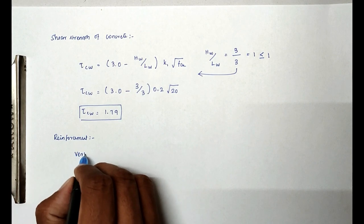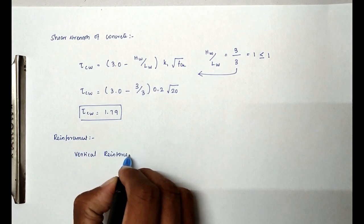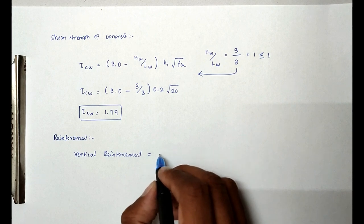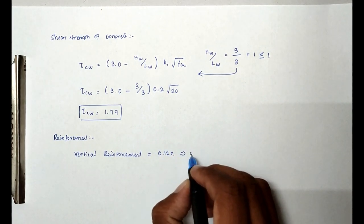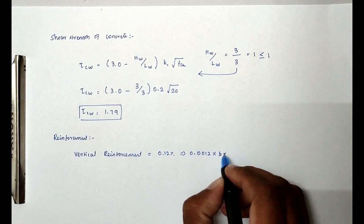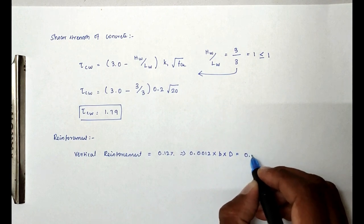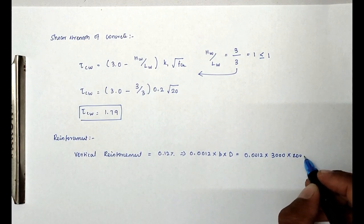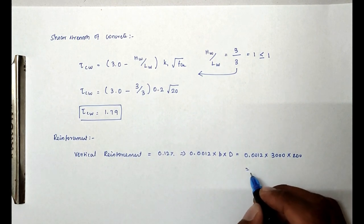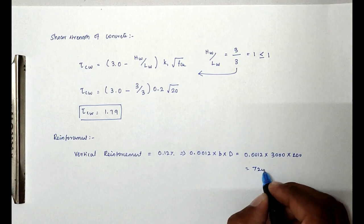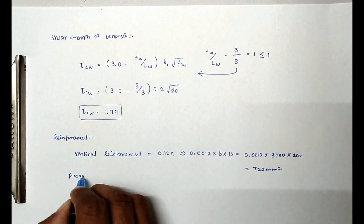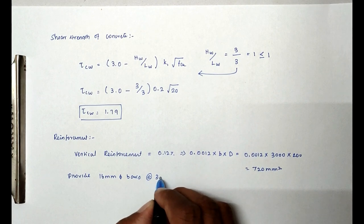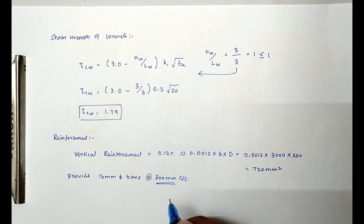For the vertical reinforcement, the minimum is 0.12% of B × D = 0.0012 × 3000 × 200 = 720 mm². Provide 16 mm diameter bars at 300 mm center to center, with a minimum spacing of 300 mm.